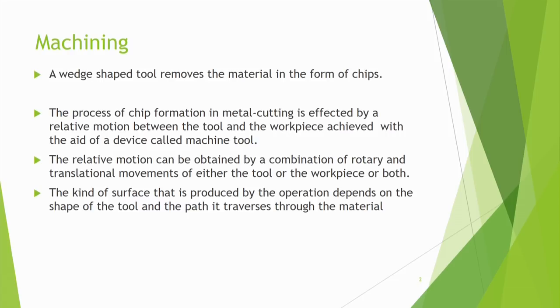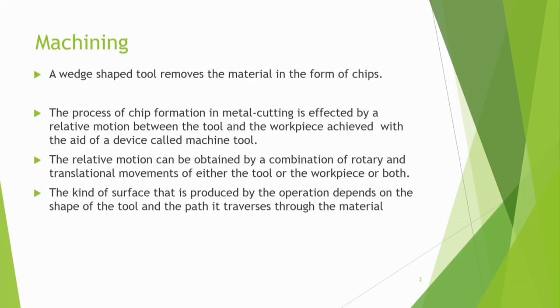The relative motion can be obtained by a combination of rotary and translational movements of either the tool or the work piece, or both. It can be translational motion — my tool may be moving like this — or sometimes the work piece may rotate and the tool is stationary, like in a lathe machine. There can be different type of combinations of the rotary and translational movement. The kind of surface produced depends on the shape of the tool and the path it traverses through the material.